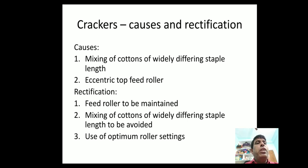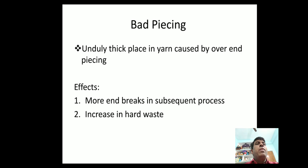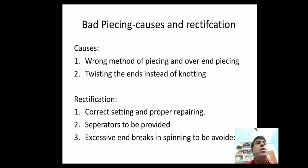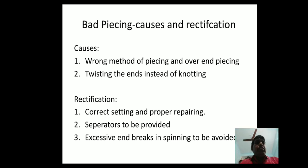Rectification for crackers: the feed roller is to be maintained and mixing of cottons of widely differing staple length is to be avoided. Bad piecing refers to an unduly thick place in yarn caused by overhand piecing. Effects include more end breaks in subsequent processes and an increase in hard waste. Causes include wrong method of piecing, overhand piecing, and twisting the ends instead of knotting.